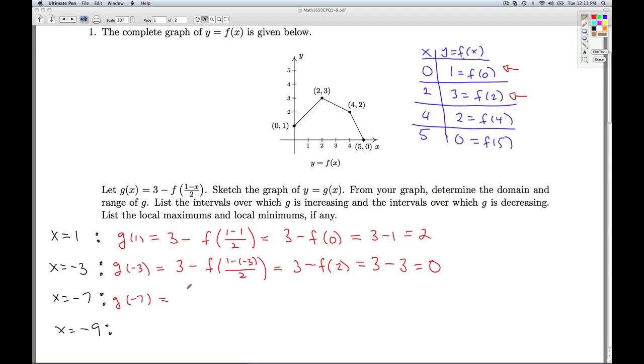Now, take g of negative 7, by definition, that's 3 minus f of 1 minus negative 7, divided by 2. Which is 3 minus f of 1 minus negative 7 is 8. 8 over 2 is 4. 3 minus f of 4. f of 4 is 2, and that's 1. Finally, x is negative 9. g of negative 9 equals 3 minus f of 1 minus negative 9 over 2. And what's 1 minus negative 9? Positive 10. 10 over 2 is 5. And f of 5 is, once again, something I know. That's 0. So I get 3 minus 0 is 3.